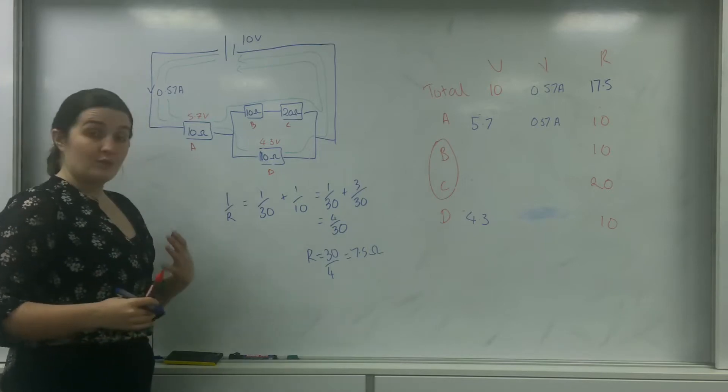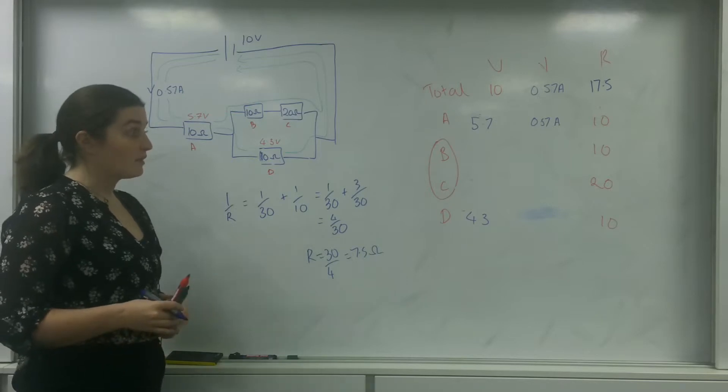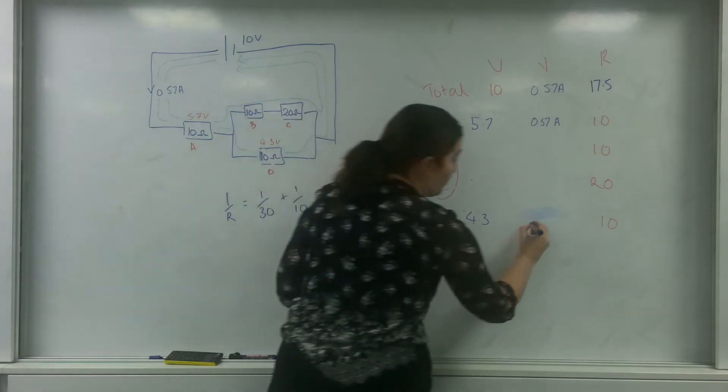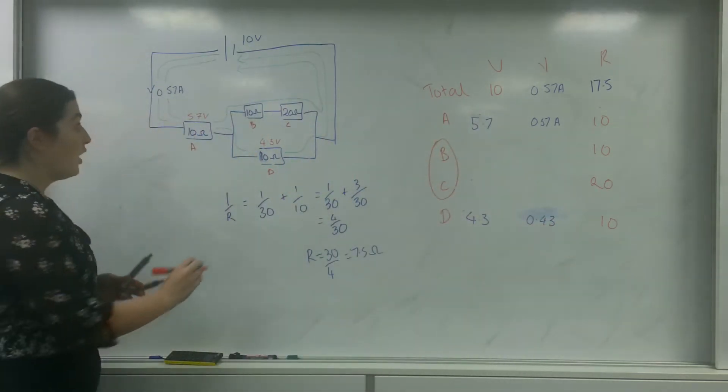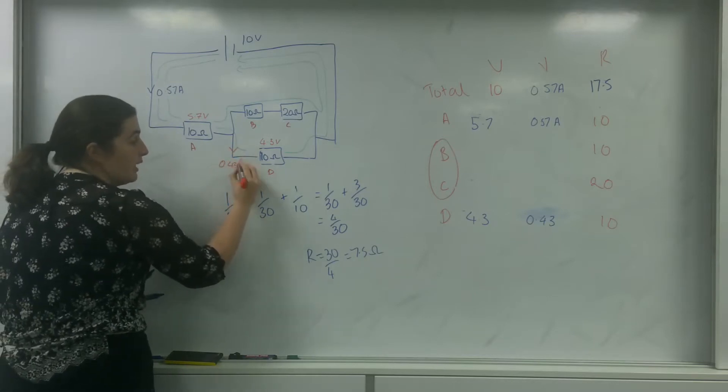So I can use Ohm's law again to work out the current. So 4.3 divided by 10 is 0.43. So I know going down here is 0.43 amps.